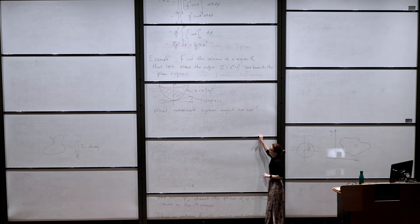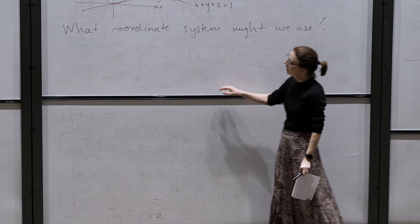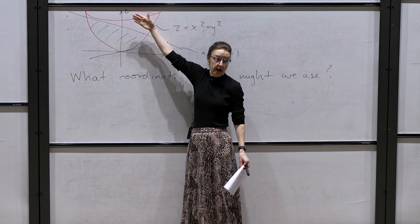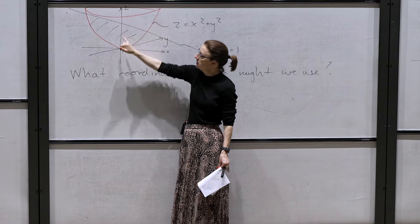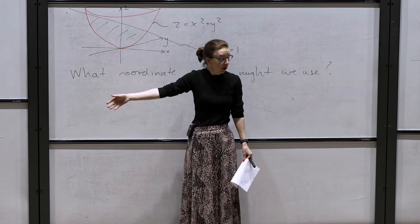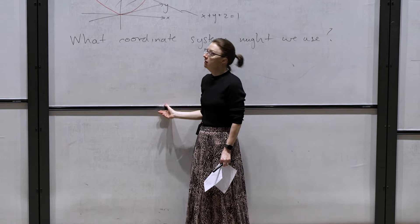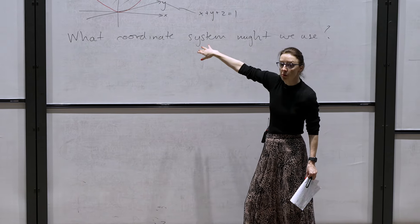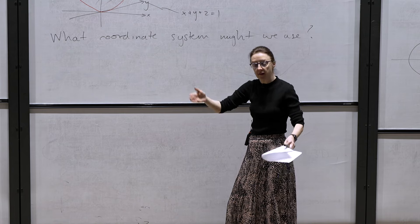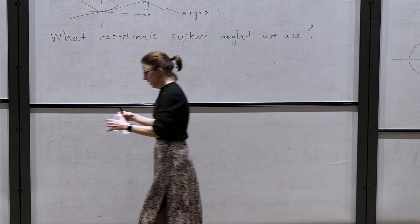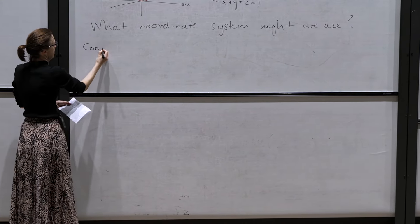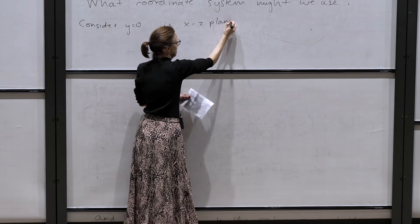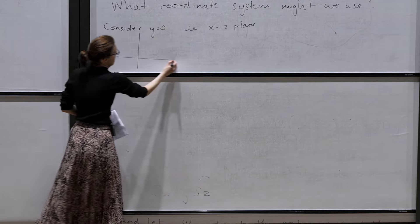The first thing we're going to do is think about just one cross-section of this shape. It's a three-dimensional shape, but let's consider what it looks like in the x-z plane. Here's x and here's z — taking a cross-section through this domain at y equals 0. In the plane y equals 0, the bowl just becomes z = x², which is a parabola.